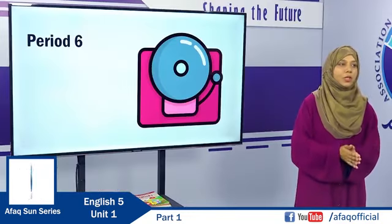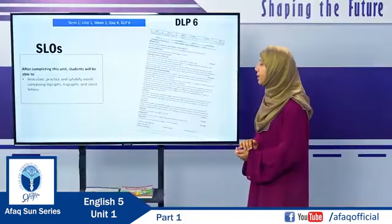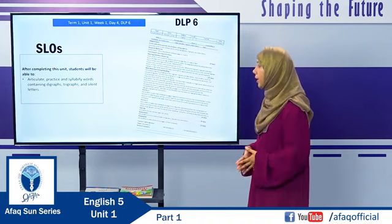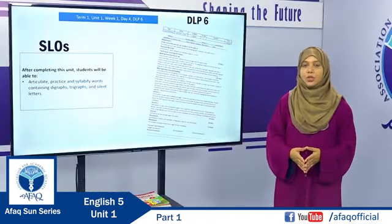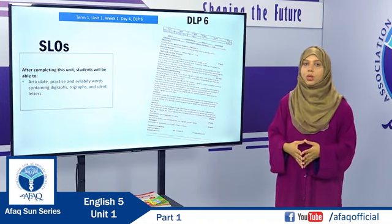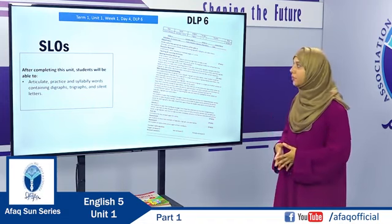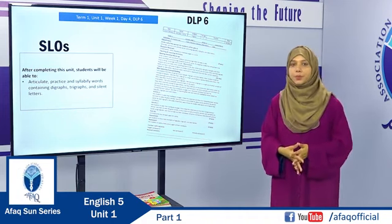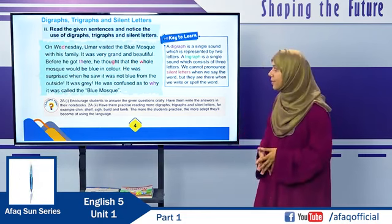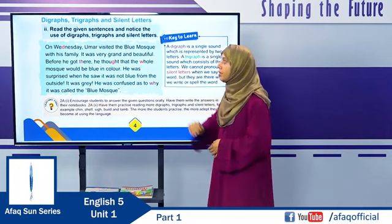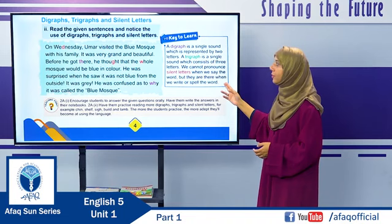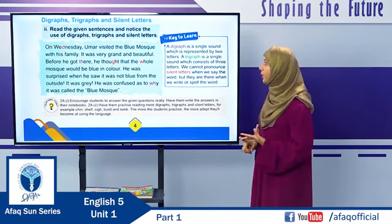This is the 2nd last period of the 1st week — period 6. In this period, students will be able to articulate, practice, and syllabify words containing digraphs, trigraphs, and silent letters. Afaq has provided complete methodology in DLP number 6, which should be taught on the 4th day of the first week of the first unit of Term 1. Dear students, open textbook page 4. You will find an exercise on digraphs, trigraphs, and silent letters. In the Key to Learn section, definitions of these terms have been provided.